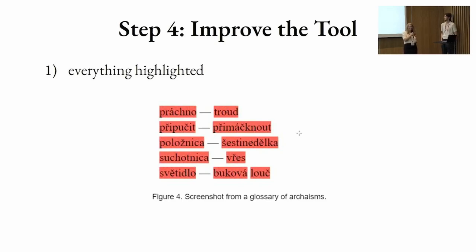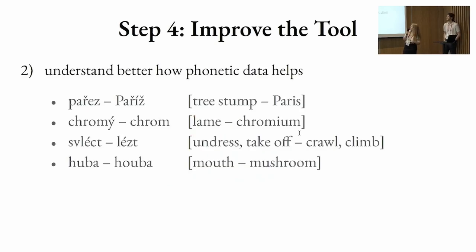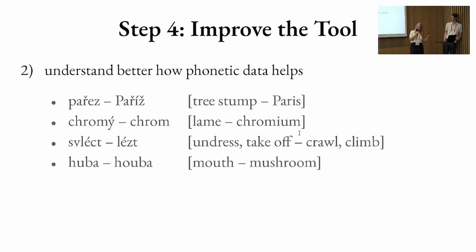Sometimes you end up with a situation where you have everything highlighted — this is a glossary from the back of a book we were reading where all these are archaisms and none of them are in the CGSL. We also decided to move forward with phonetic data because I kept making mistakes — like 'paseky,' I thought it must mean Paris. No, it means a tree stump. Or 'chromý' — lame. Now I know that the Chrome browser is the lame browser. Very often in my head I was storing these words in the same area, and so they were activating based on sound. So this is a really important and innovative feature that we're introducing.